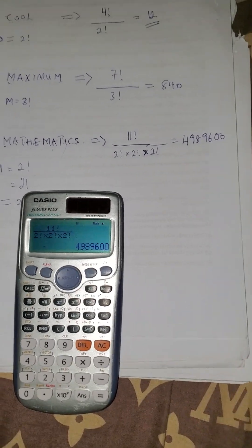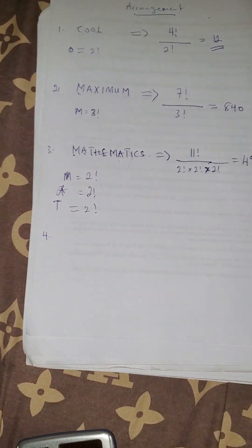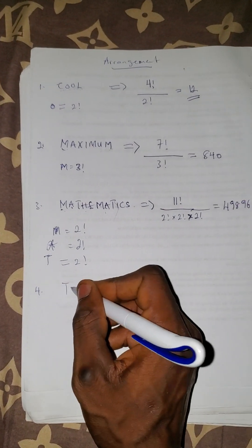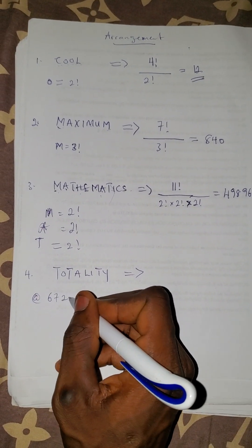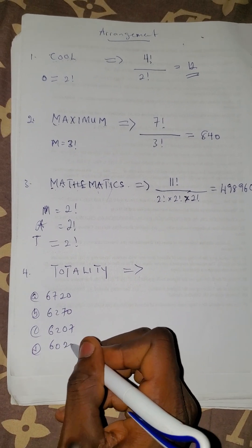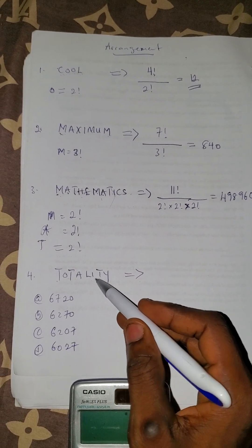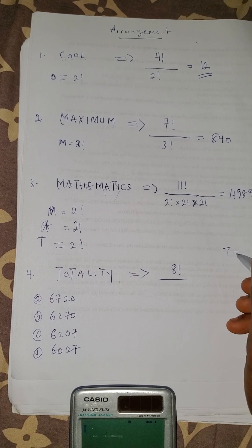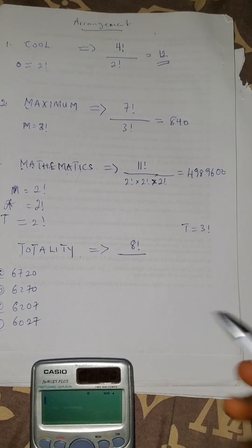Another question: in how many ways can the word TOTALITY be arranged? Option A: 6720, Option B: 6270, Option C: 6207, Option D: 6027. The total letters are one, two, three, four, five, six, seven, eight — so that's eight factorial over the repeated letters. T appears three times — one, two, three — so that's three factorial.